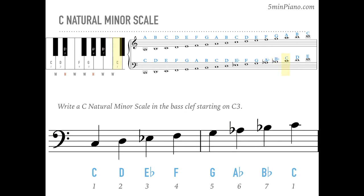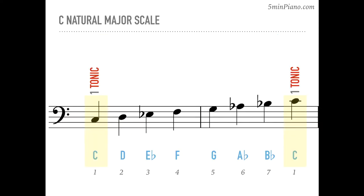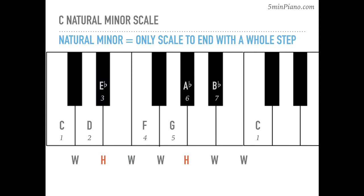So C is the tonic and names the scale. G is the dominant, a fifth up from C. And B flat, the second-to-last note, is the leading tone. The natural form of the minor scale is the only major or minor scale to end with a whole step between the leading tone and the tonic. All other scales end with a half step, which has a stronger pull back to the tonic.